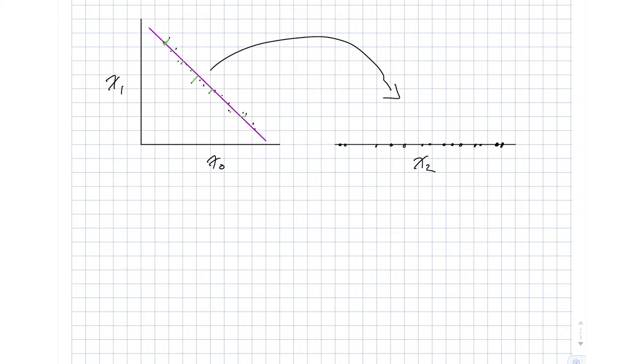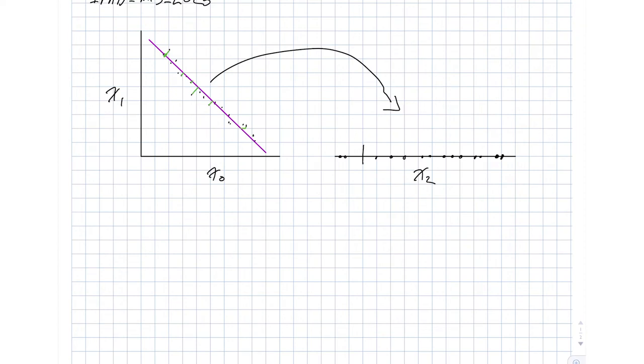So what's interesting is that we've taken a set of points that we've described with two coordinates, x0 and x1, and we've transformed them into a coordinate system where we have just one descriptor. And that is the distance along x2.